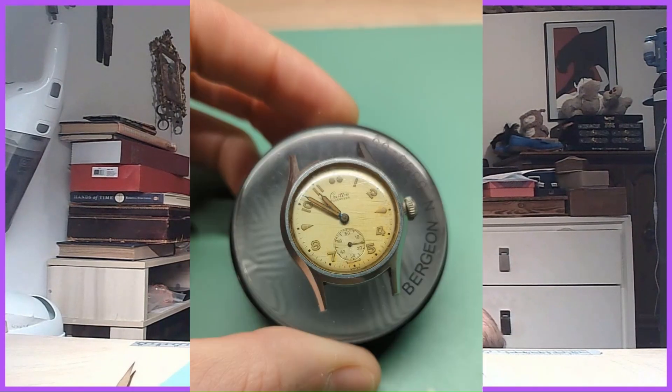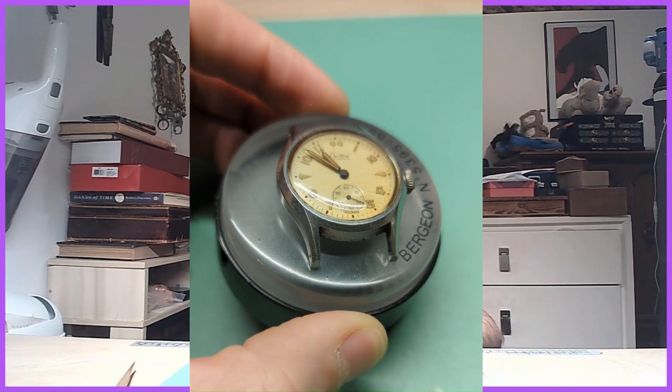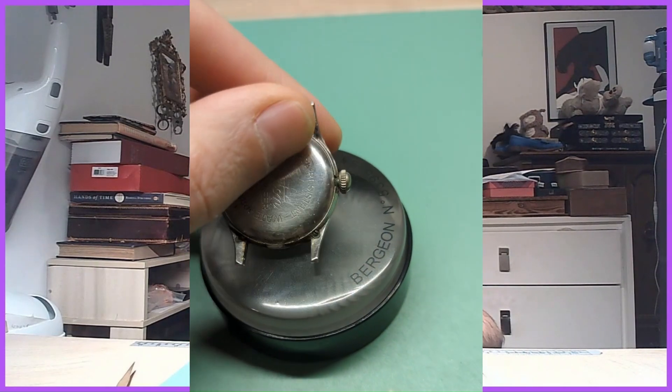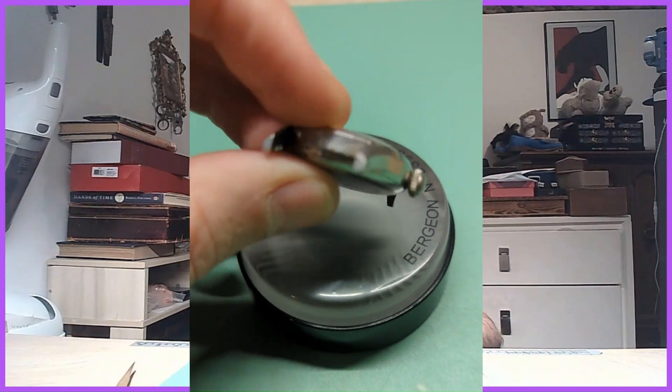The watch we're restoring today is the Croton Buccaneer, a really cool little men's military style watch. This is the kind of watch that was definitely worn by military members. It was privately sold, not directly issued to them.